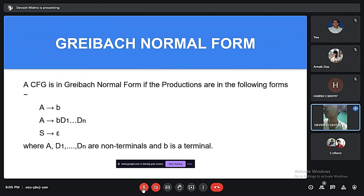A CFG is in Greibach Normal Form if the productions are in the following forms: A to b, A to bD1D2D3...Dn, and S to epsilon, where A, D1, D2...Dn are non-terminals and b is a terminal.